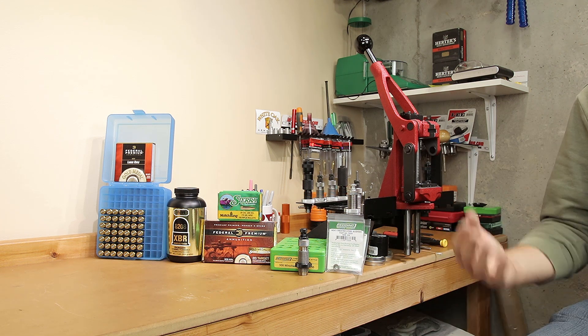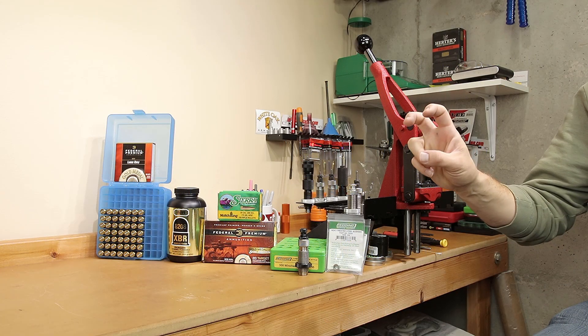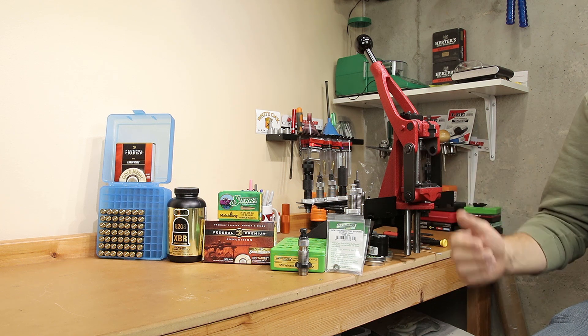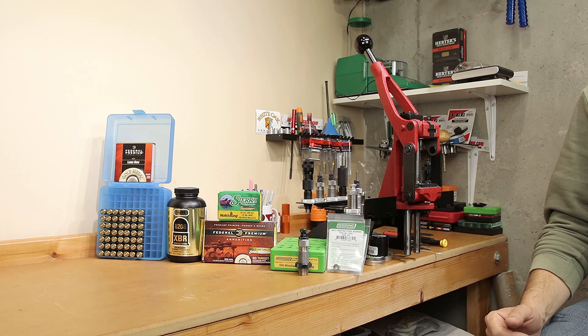Other things that are going to affect your neck tension value include the neck wall thickness of the cases you're using, the amount of bearing surface, the surface condition of the inside of the neck — leaving residual carbon can act as a lubricant, while overcleaning your brass might actually increase neck tension. The actual length of the neck, whether projectiles have any coating, whether you're annealing your brass or it's been fired multiple times, and even the duration of time between the projectile seating process and actual firing can all affect this value.